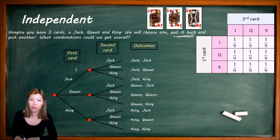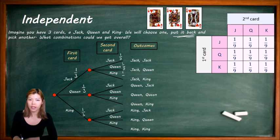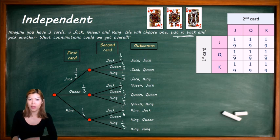So the first event's probabilities are a third, a third, and a third, and the second event's probabilities are still a third, a third, and a third. So when you multiply across, a third times a third means each of these outcomes has a probability of 1 over 9.